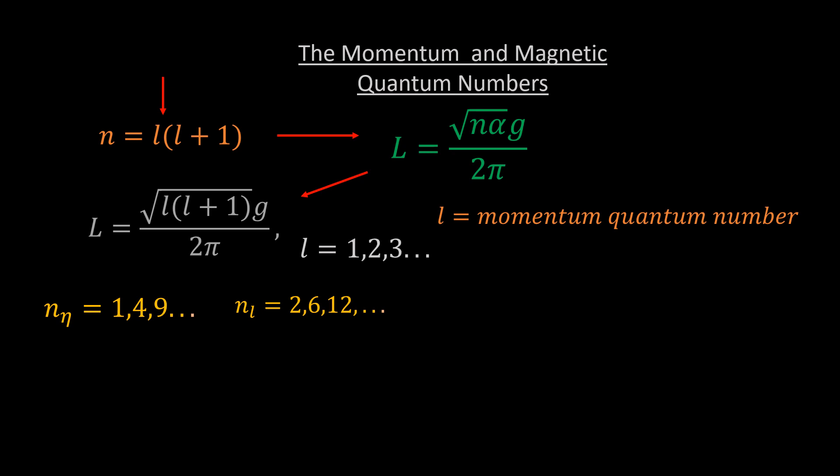A combination of these two sets produces a sequence for n, missing the numbers 3, 5, 7, 8, 10, 11, and so on. Let these missing numbers represent a new set, nm, like so. So that the set n is completed by a union of all three sets, like so. m is the magnetic quantum number, and it is just the value of n that are not covered by the principal and momentum quantum numbers.